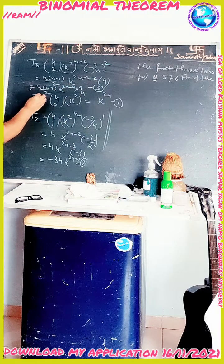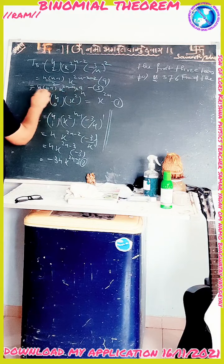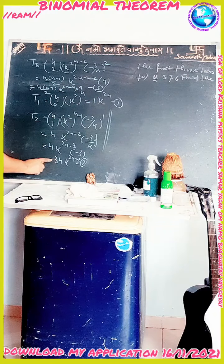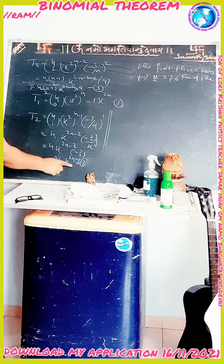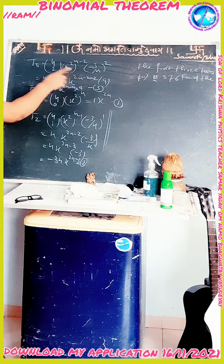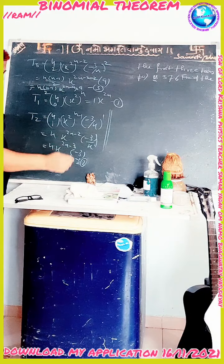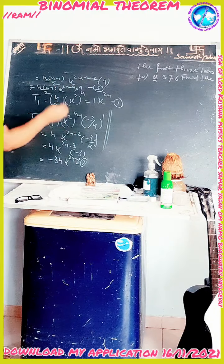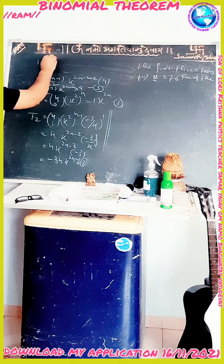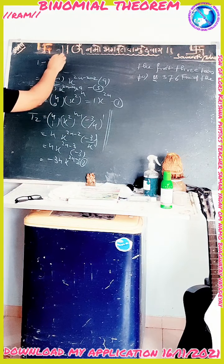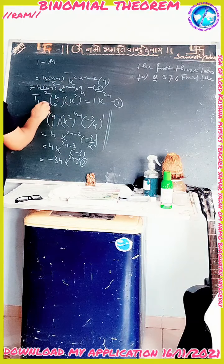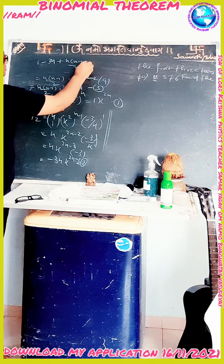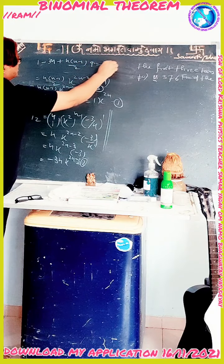Now, the sum of the coefficients of these three terms is given as 376. The coefficient of T1 is 1, of T2 is −3n, and of T3 is 9n(n−1)/2. So we write: 1 − 3n + 9n(n−1)/2 = 376.